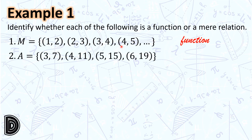Number 2: A is the set of ordered pairs (3,7), (4,11), (5,15), and (6,19). Again, each value of x — or the first element in each ordered pair — is related to exactly one value of y. Therefore, set A is a function.